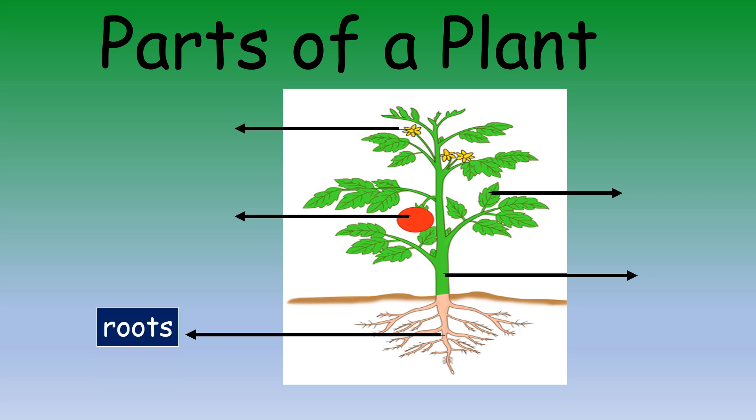These are the roots. The root fixes the plant to the ground and also takes in water from the ground. This is the stem. The stem holds up the plant and also carries food and water to the different parts of the plant.